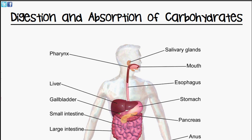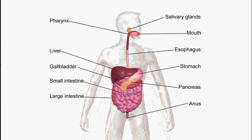Today's video will be discussing the digestion and absorption of carbohydrates. We have here a simplified drawing of the digestive system. Food goes through the mouth into the esophagus, passes into the stomach, from the stomach into the small intestine, and from here the food is absorbed.